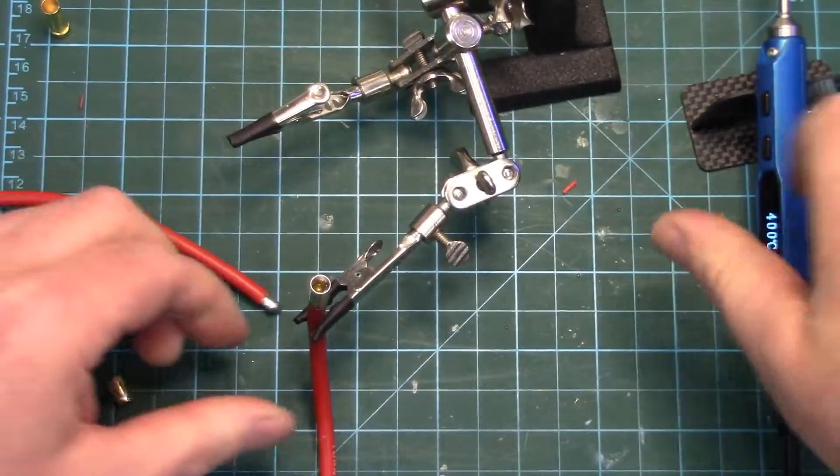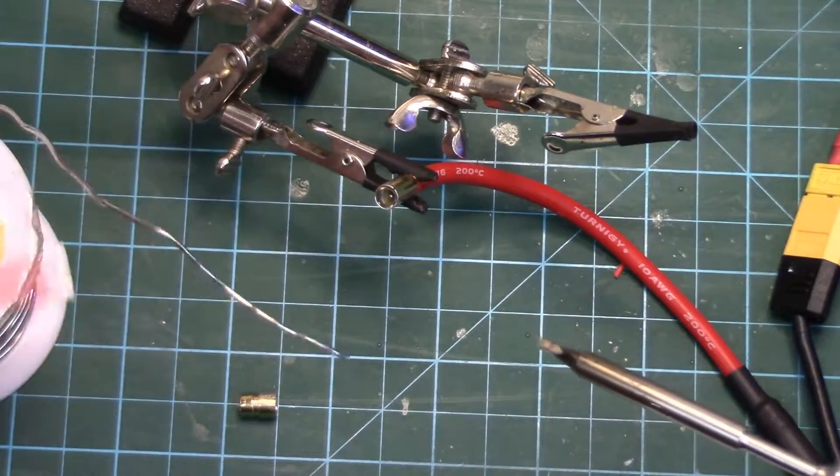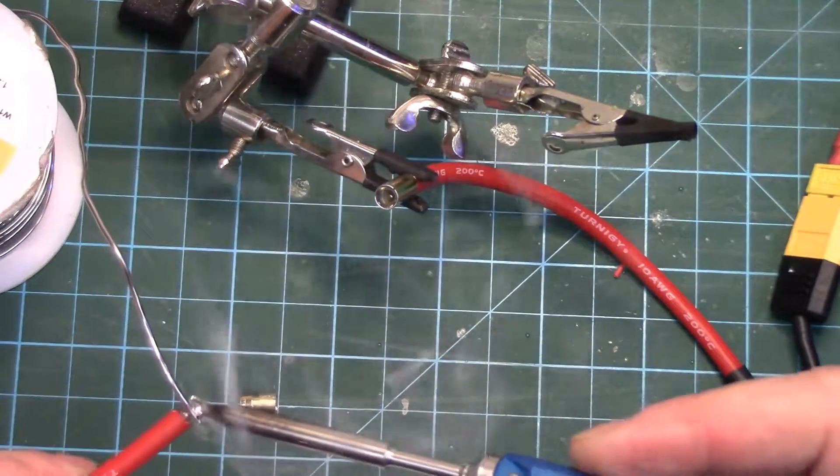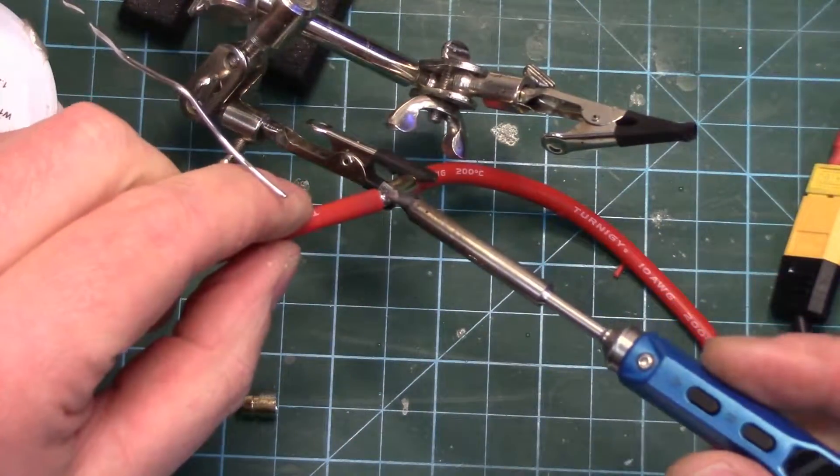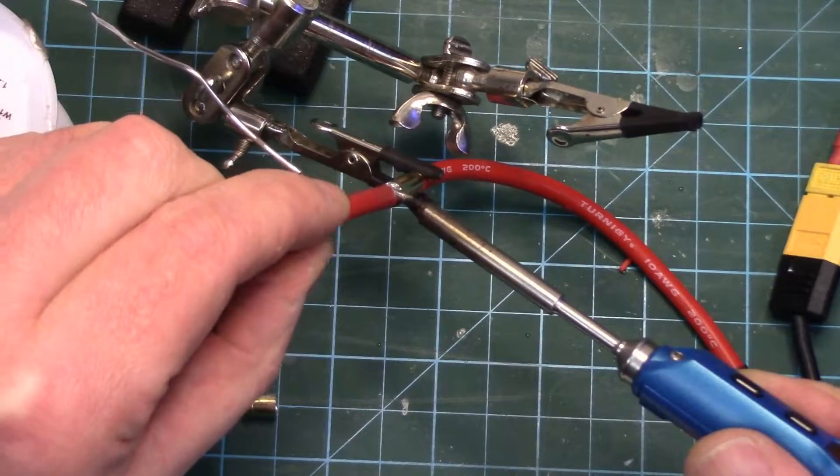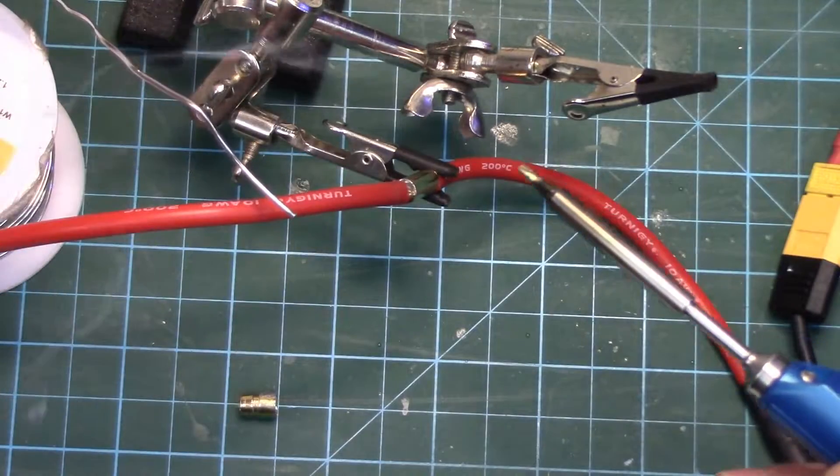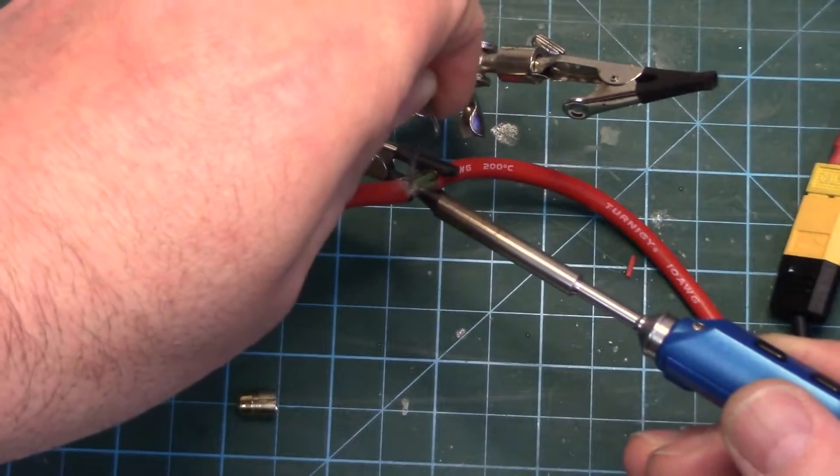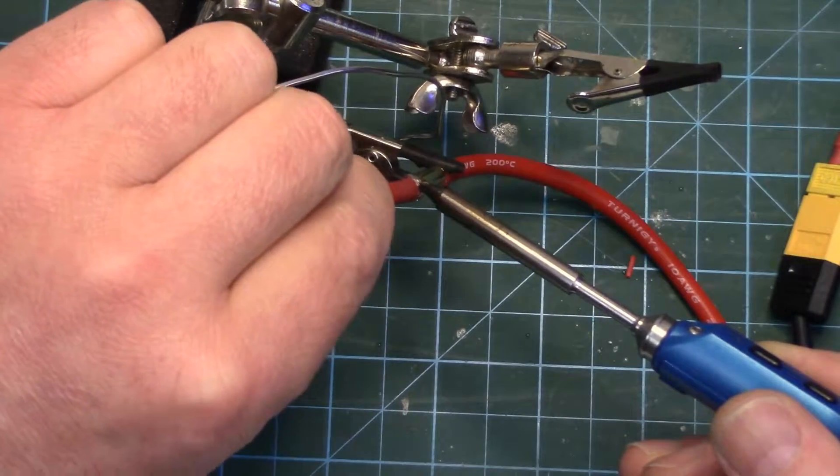I'll just let that cool a bit. Okay again tinning, having the ends tinned beforehand very important. Just get some solder on the tip and on the wire so we've got good heat conductivity into the bullet and let that sink right in. A little more solder I believe. There we go.